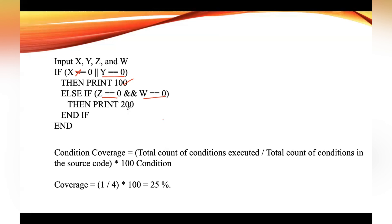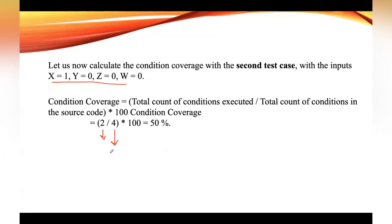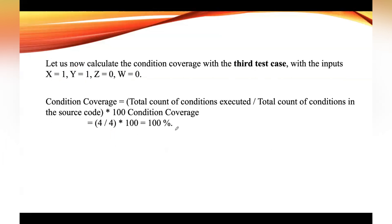Statement five is executed, printing 200. Out of the total four conditions, all four got executed: first x equal to zero, then y equal to zero, and in this case both z equal to zero and w equal to zero. So the condition coverage in the third test case is 100 percent.